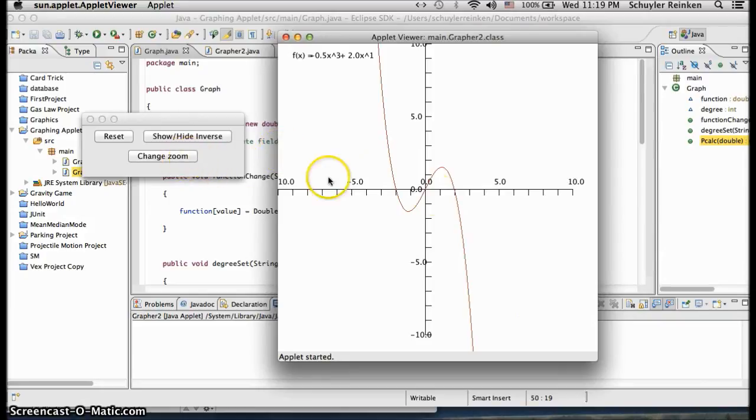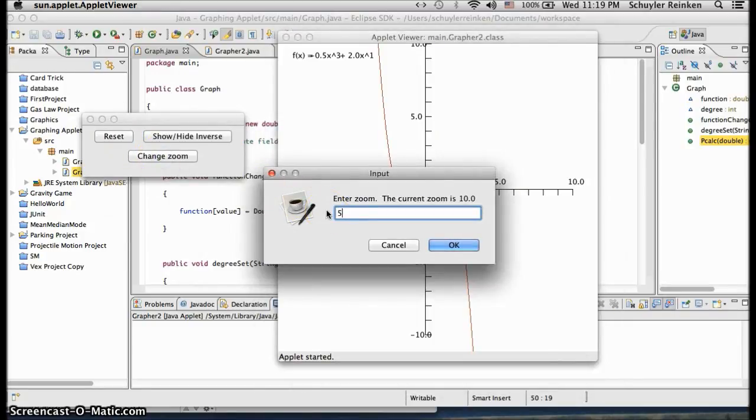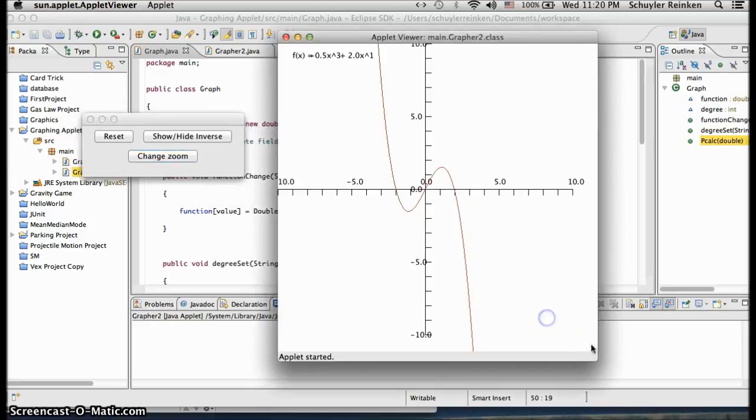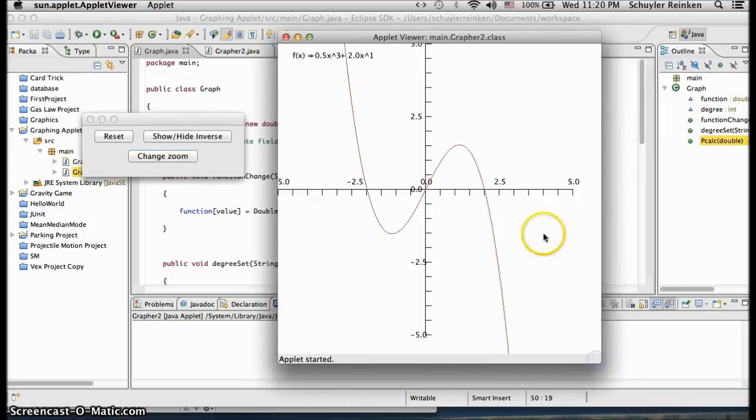You can also change the zoom. Right now it's a 10 by 10, and that looks pretty good, so I don't think I'll change that unless I want to change it to a 5 by 5. Why don't we do that? We could change that to 5, and there we go. Now we're a bit more zoomed in on our graph.